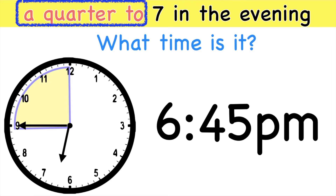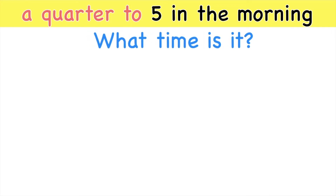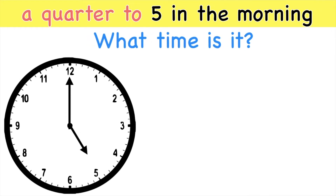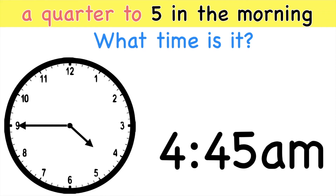How about if we have this? Quarter to 5 in the morning. What time is it? Again, when you see the word quarter to, that is 15 minutes before. So let's count backwards: 5, 10, 15. So what time is it, children? It's 4:45 a.m.